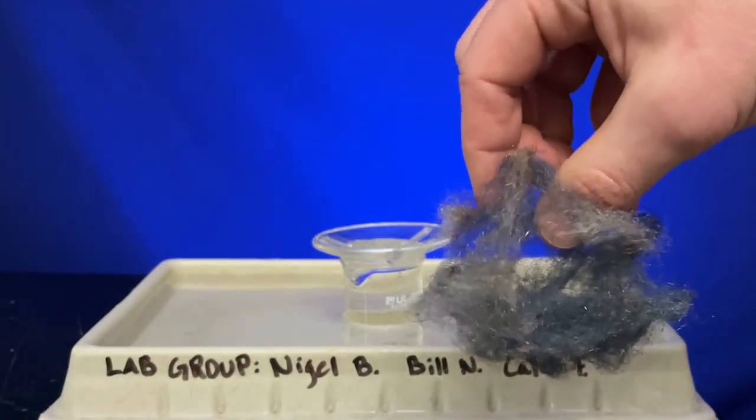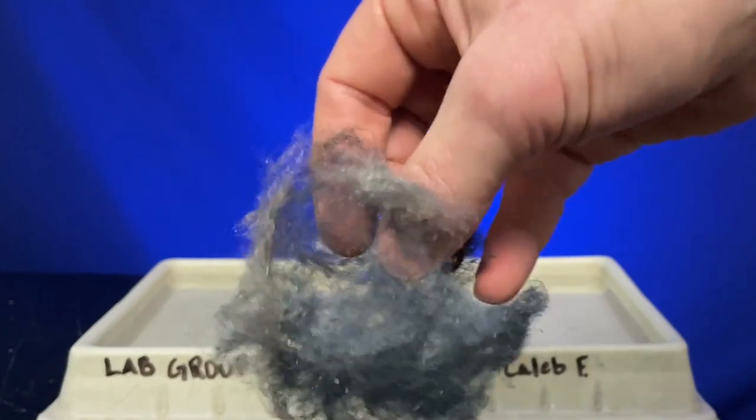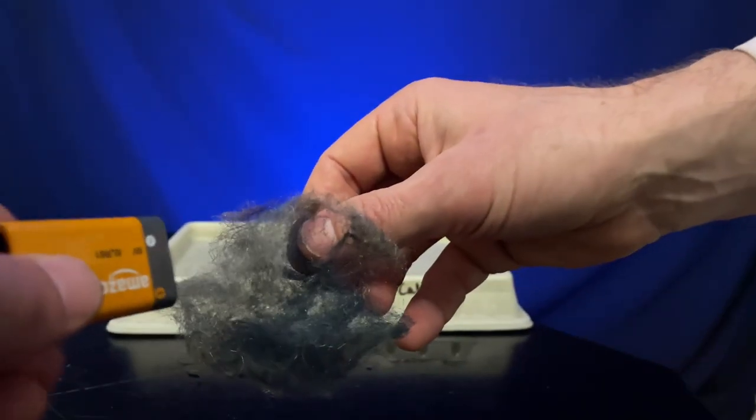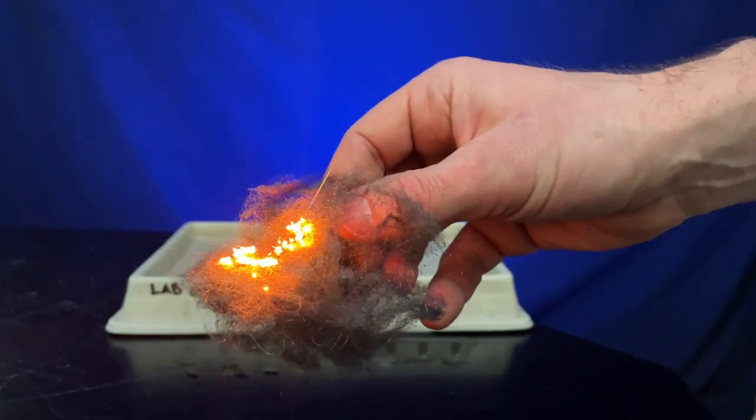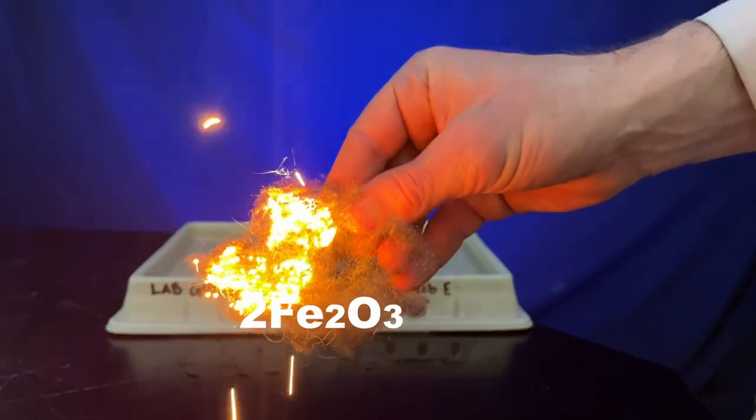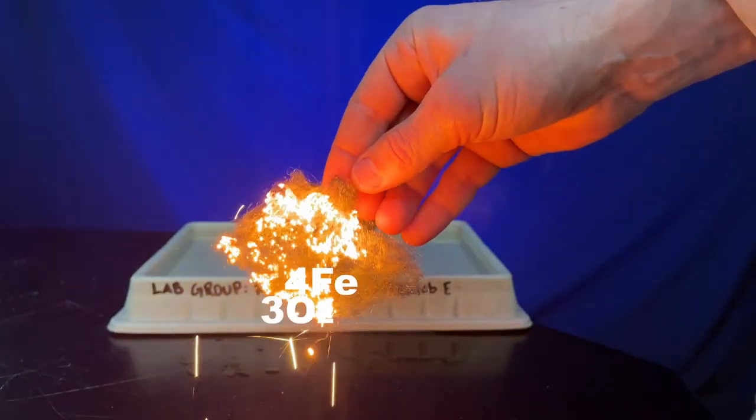The part of the steel wool that is bluish is reacted, but that gray part is unreacted. See if we touch the unreacted, it'll still react. I still think this is one of the coolest looking reactions.